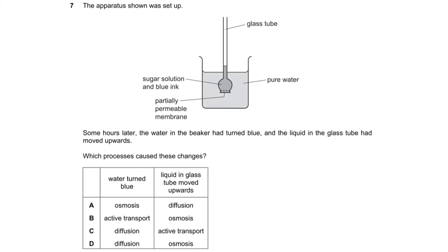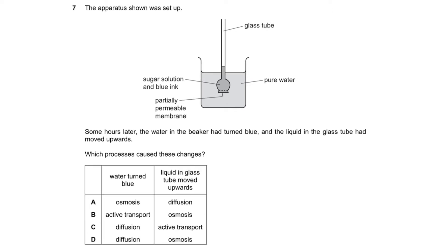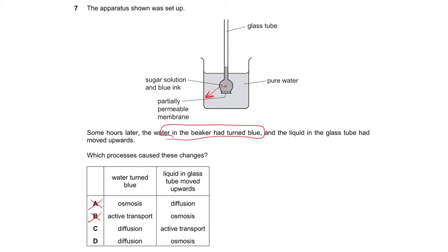Question number seven says the apparatus shown was set up. Some hours later the water in the beaker had turned blue and the liquid in the glass tube had moved upwards. Which processes caused these changes? The water in the beaker had turned blue, so the blue ink here had diffused outside, so it's not the water moving, it's the ink moving. So it's not osmosis, it's not active transport either because there's no protein channels. So it's either C or D because it's diffusion. And then the liquid in the glass moved upwards, that's the water moving, so it is osmosis.